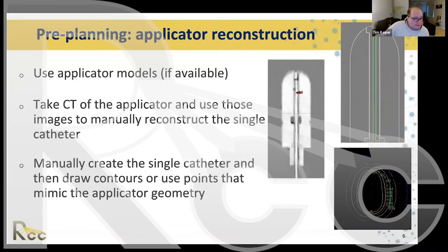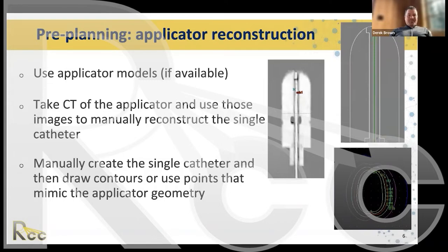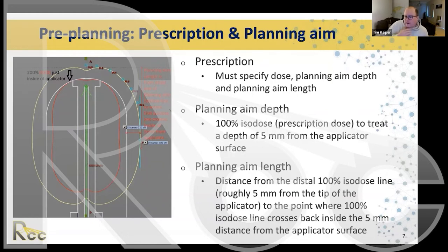We should use applicator models if available — some treatment planning systems have these embedded. We should take a CT of the applicator and use those images to manually reconstruct the single catheter. This CT image shows a cylinder inserted in a phantom with a dummy wire through the central catheter, which allows us to digitize — telling the treatment planning system where in three-dimensional space we can place seed positions.